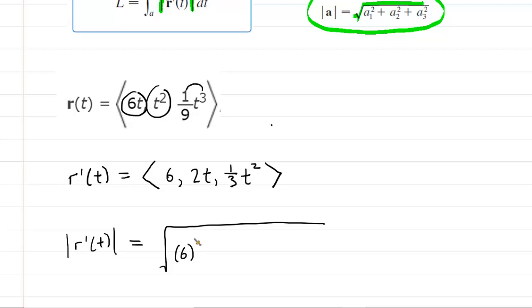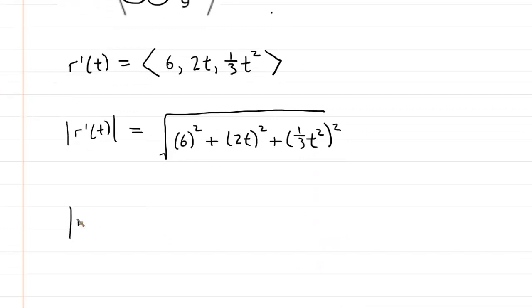So we would have 6 squared plus 2t squared plus 1/3 t squared squared. And, of course, we want to simplify this. We square 6 to get 36. 2t squared is 4t squared. Notice you have to square the coefficient of 2 and the t. And then we square the 1/3 t squared to get 1/9 t to the 4th.